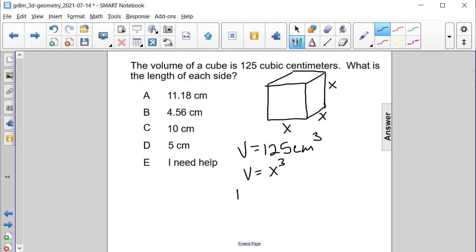So we can substitute 125 in for V for volume and set it equal to X cubed. And then in order to solve for the variable X, we need to cube root both sides.